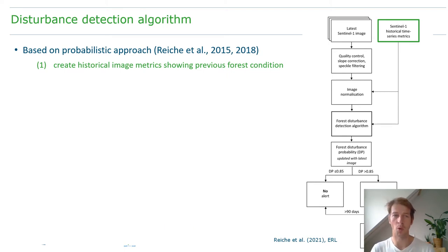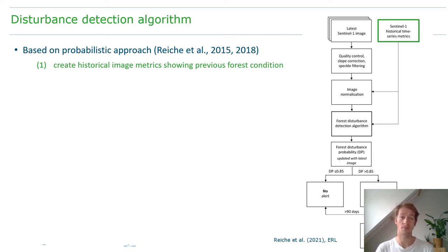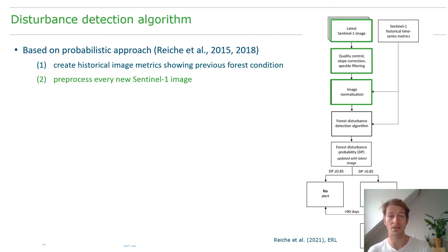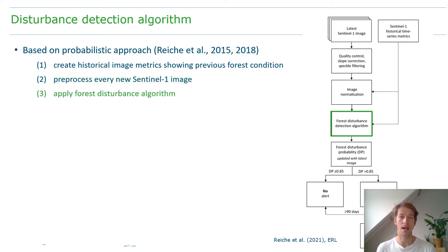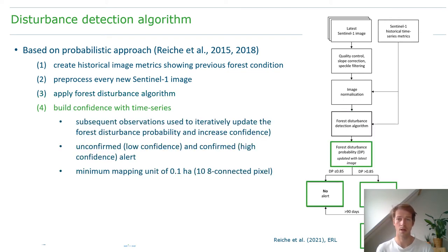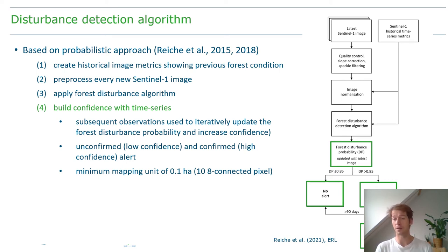How do we detect forest disturbances? Everything is based on a probabilistic approach developed over the past years and scaled within Google Earth Engine. First, we create historical image matrices showing previous forest conditions — essentially telling the algorithm how undisturbed forests look. Every newly incoming image is preprocessed and then run through our forest disturbance algorithm to calculate the probability of a pixel being disturbed. We then build confidence in a moving time-series approach, where subsequent observations iteratively update the disturbance probability. If confidence decreases below a threshold, the pixel is unflagged; if it increases above a threshold, it is confirmed with high confidence.